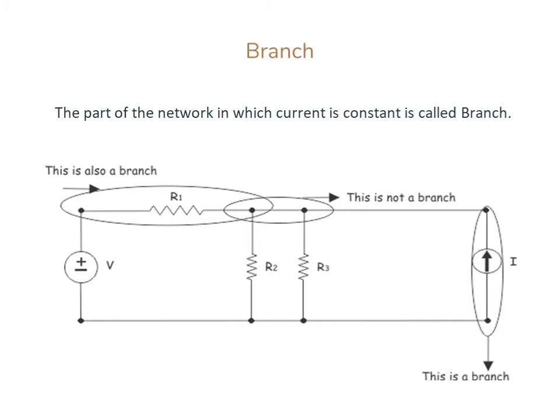Branch: The part of the network in which the current is constant is called a branch.